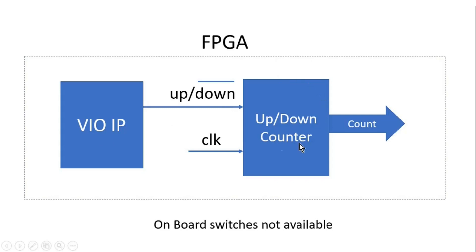This is how we will connect the VIO IP to this up-down counter. After placing the VIO IP inside our system, we can generate a bitfile. While generating the bitfile, Vivado will also generate a .ltx file. The .ltx file is only generated when we have debugging IPs inside our system — for example, ILAs or VIO IPs. In this case we have a VIO IP, so Vivado will also generate the .ltx file. Once the .bit and .ltx files are generated, we can program them through the hardware manager, which is part of the Vivado GUI.